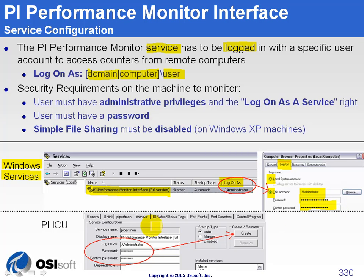The second way is using PIICU, our Interface Configuration Utility. On the fourth tab, Service, you have three fields: Logon As, Password, and Confirm Password. You have to set them prior to clicking Create, so the service will automatically be created with the user account.